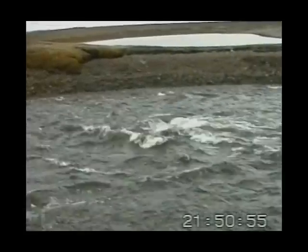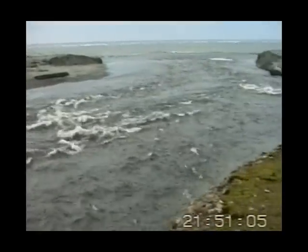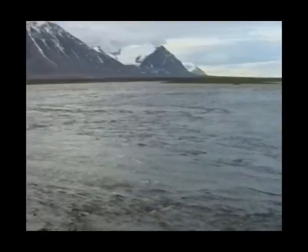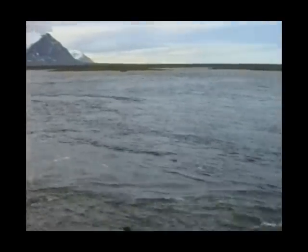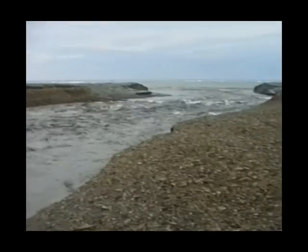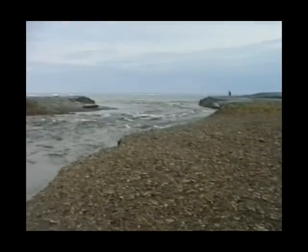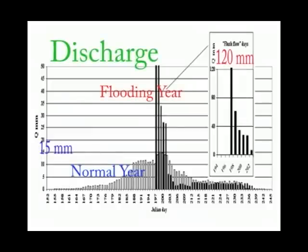This example is the discharge of a small catchment with an area of 280 hectares only. How destructive may the flooding and outflow from a large catchment be? The discharge in a flooding year is about 10 times that of a normal year during peak flow, and the pattern is also different.